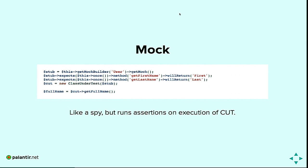Lastly, mocks. A lot of people use the term 'mock' when they may not actually be using a mock — they might be using a stub or even a dummy. PHPUnit doesn't help this because everything requires calling get mock. In this example, we're expecting get first name was called once and will return 'first', and get last will return 'last'. Then we exercise the class at the last line with get full name. When this runs, the mock object itself does the verification at runtime — this differs from a spy, where we run those verifications manually afterward.